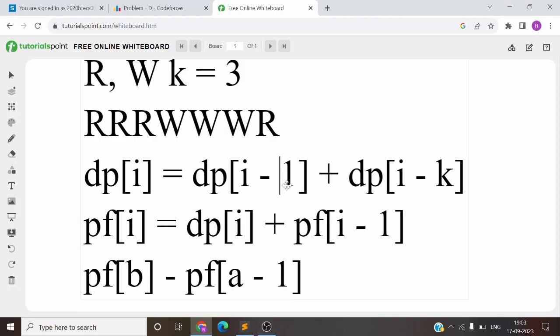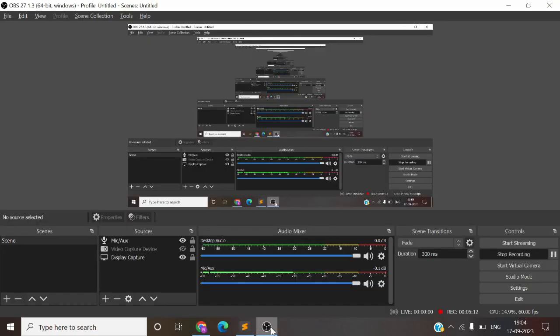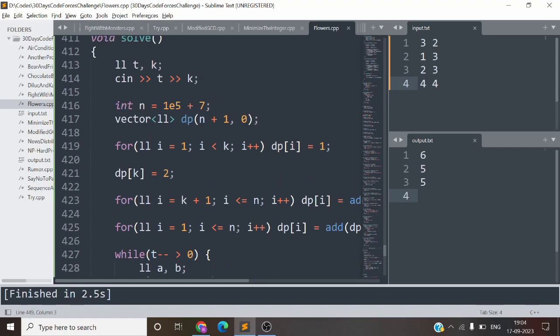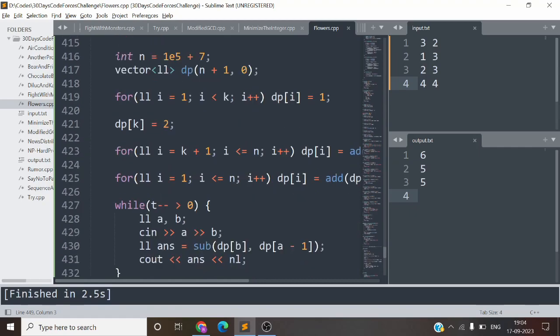How did it come? So this is the i minus 1 step and i minus k step. i minus 1 plus R is the first step, and i minus k is the W step. So this was the 2 DP state, and the final step will be our answer.